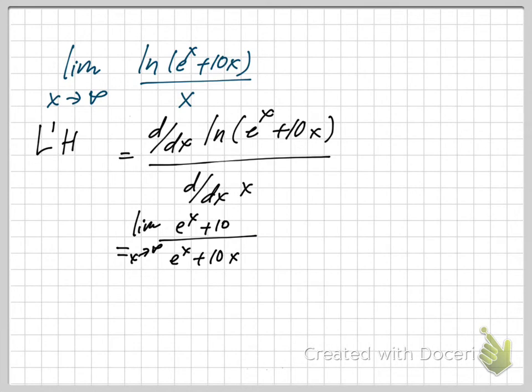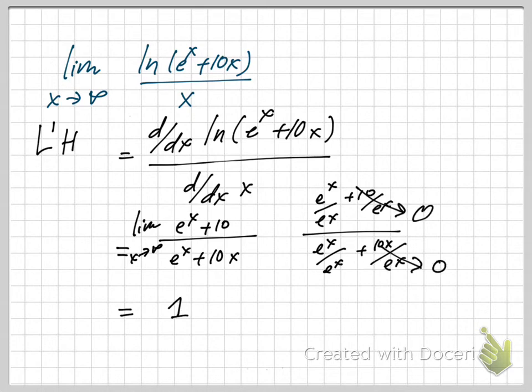Now the goal is to find this limit. You see there's e^x on the top and bottom, so we divide both by e^x. Taking x to infinity, you get 0 on these terms. 10/∞ is 0, 10x/e^x goes to 0. Then you have 1 on top and 1 on bottom, so the answer for this limit is 1.